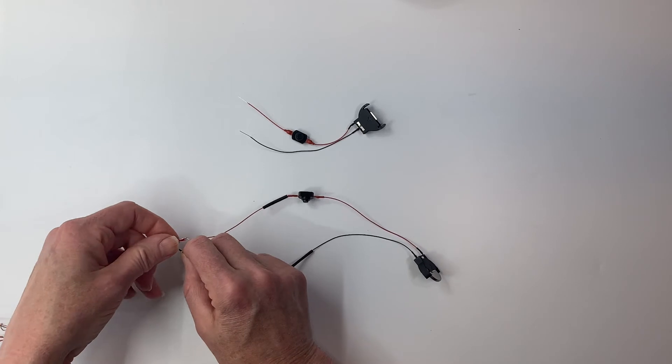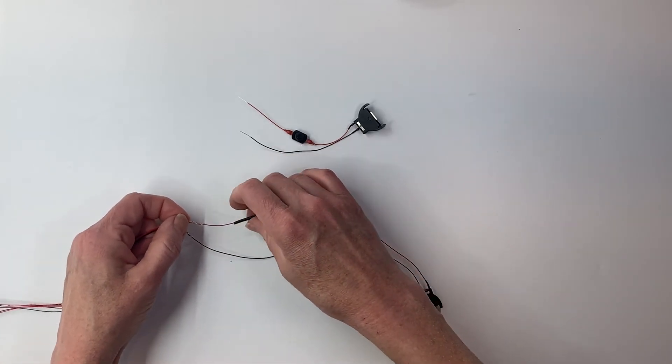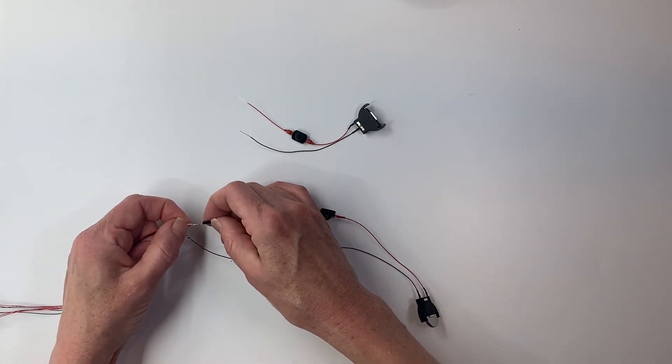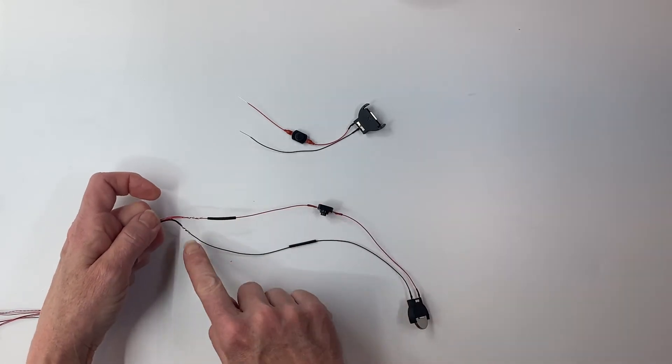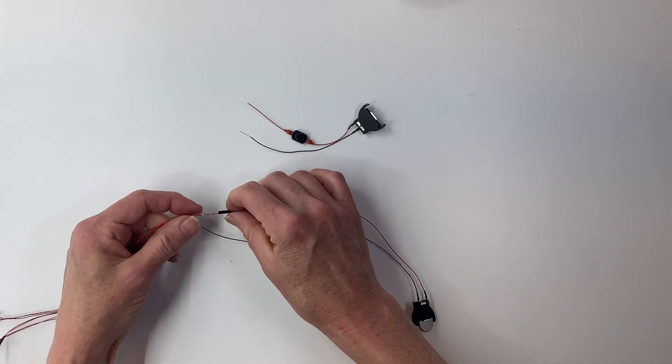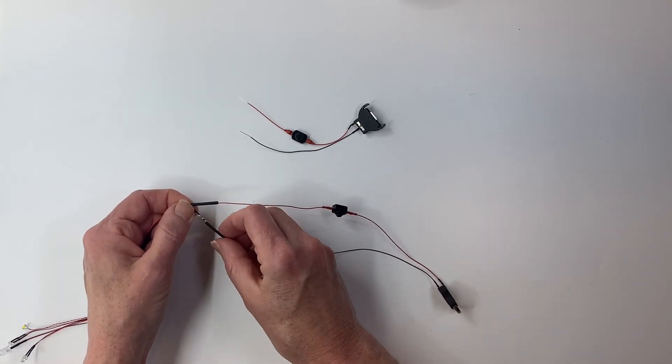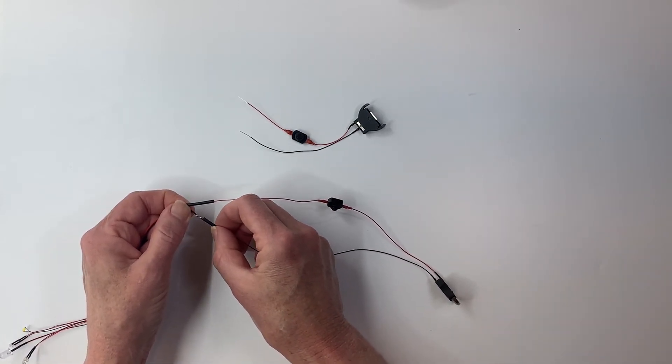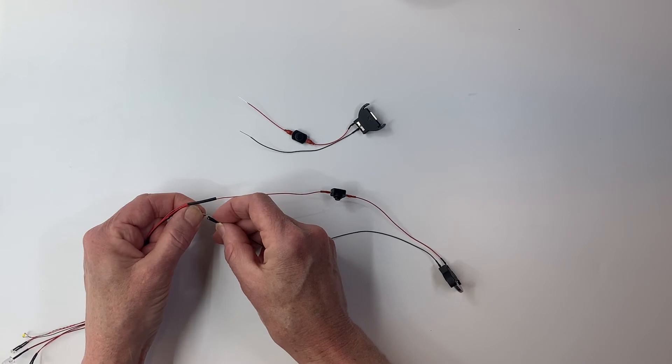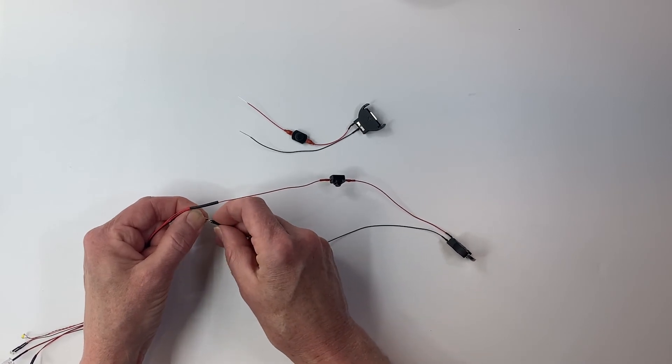Now before I turn on the switch, I'm going to make sure to slip my shrink tube over the connection because I don't want these two wires to touch each other. This shrink tube can be heated to shrink it and it will also help to solidify the connection and make sure that the shrink tube doesn't slip down.